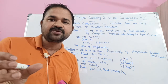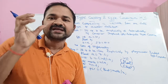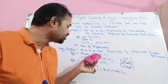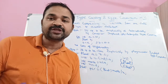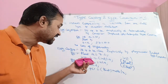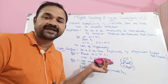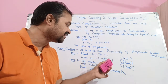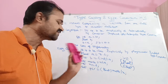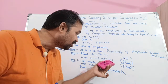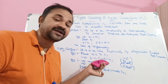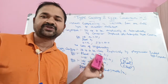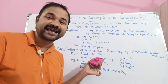When we typecast B (which is 7.2) to int, only the integer part is stored. The integer part of 7.2 is 7. So A is equal to 7. The decimal part .2 is lost. That is why this is called typecasting — and there is a loss of information.